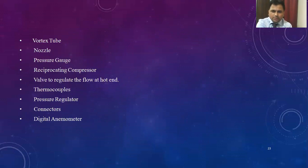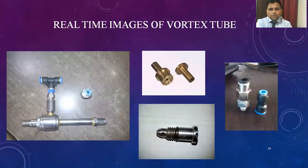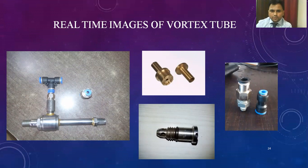Certain instruments are listed here: thermocouples, pressure regulators, connectors, and digital anemometers — required for measuring temperature, pressure, velocity, and mass flow rate of the air. These are real-time diagrams of the vortex tube currently being worked on — showing the actual appearance of the vortex tube.